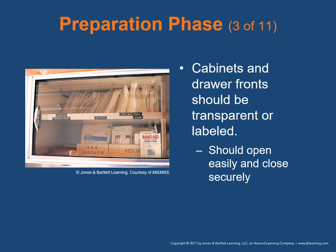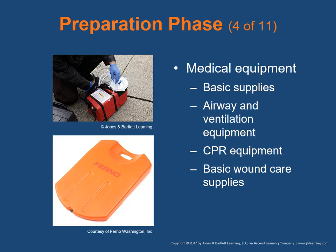Cabinets and drawers should have either transparent fronts or be labeled, open easily, and close securely. Basic supplies include disposable gloves and sharps, airway and ventilation equipment, basic wound care supplies, splinting supplies, childbirth supplies, AED, patient transfer equipment, medications, communication equipment, and other regionally appropriate supplies. Airway and ventilation equipment includes oropharyngeal airways for adults, children, and infants; nasopharyngeal airways for adults and children; and equipment for advanced airway procedures if authorized by state regulations and your local medical director.